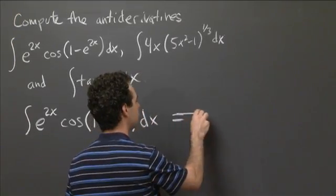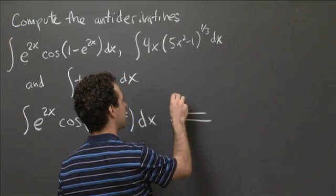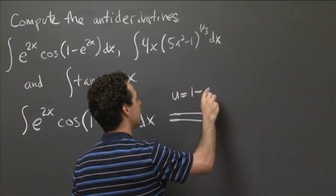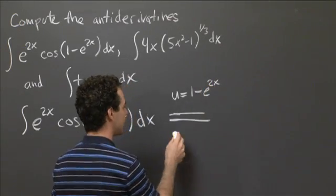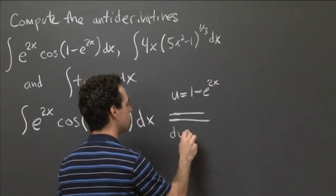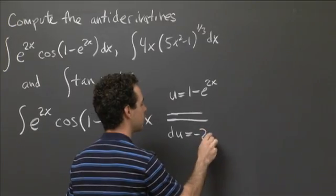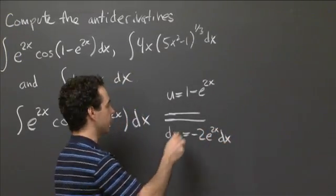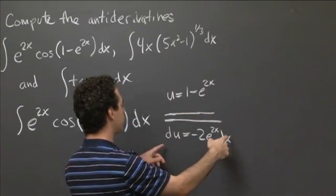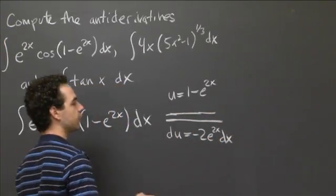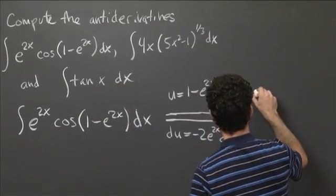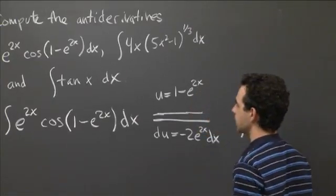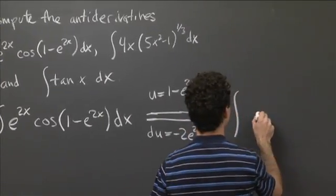So I'm going to take, for my substitution, I'm going to take u equals 1 minus e to the 2x. And so that means du is equal to minus 2 e to the 2x dx. OK. So that's my substitution. And when I put my substitution into this integral, what do I get? Well, so I have cosine of 1 minus e to the 2x just becomes cosine of u.